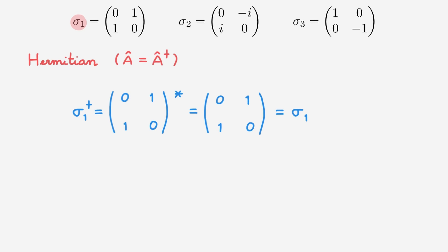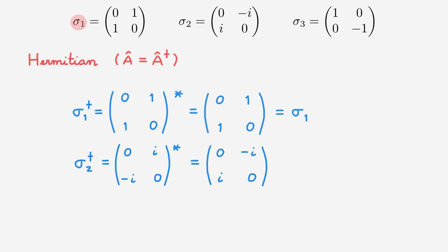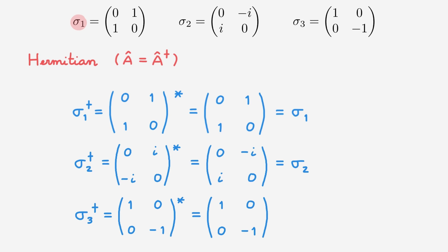Let's try sigma 2, which is slightly more interesting. The adjoint of sigma 2 is equal to the transpose of the matrix and then the complex conjugate, which flips the signs of the imaginary terms — and the result is indeed equal to sigma 2. Finally, for the adjoint of sigma 3, we calculate the transpose conjugate, which is trivial to evaluate as the matrix is real, and we again get sigma 3. These relations explicitly confirm that the Pauli matrices are hermitian.